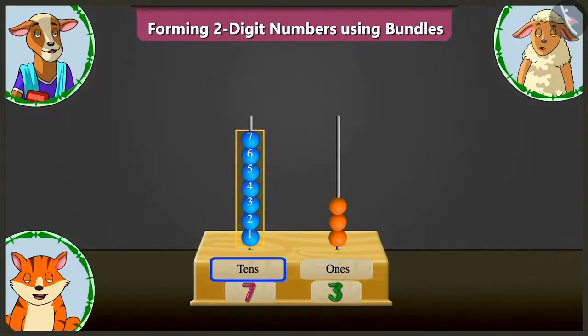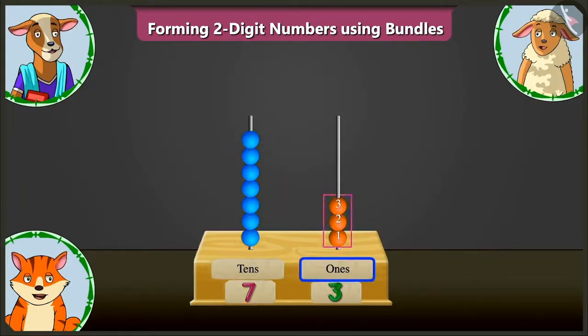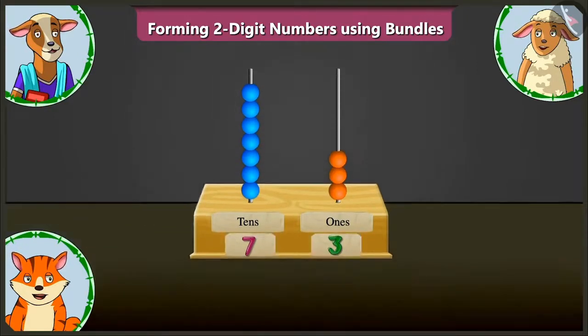Now, here, in the tens box, seven tens means 70 and in the ones box, three ones means three. So, adding 70 and three makes it number 73. Absolutely correct.